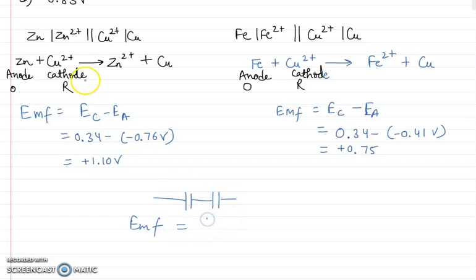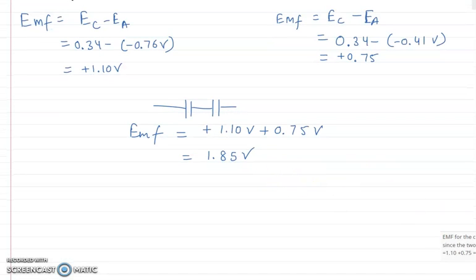it would be EMF of the first cell plus EMF of the second cell, that is plus 1.10 volt plus 0.75 volt, that equals 1.85 volt. Therefore, our answer is 1.85 volt.